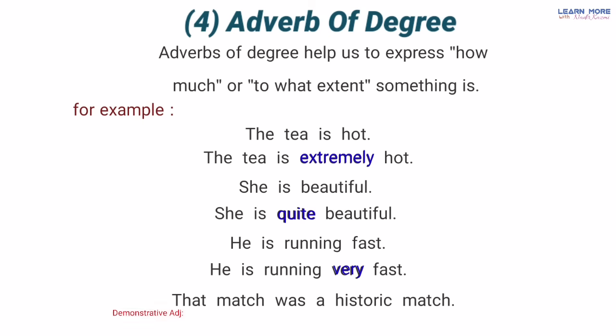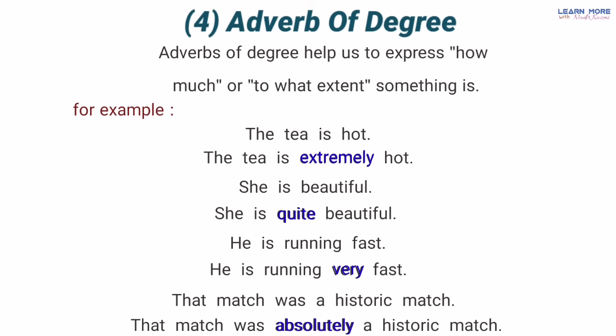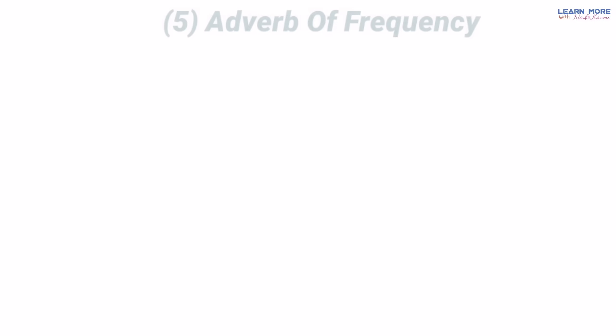'That match was a historic match' — woh match ek tariqi match tha. 'That' yahan par ek demonstrative adjective hai kyunke uske foran baad 'match' jo noun hai woh aa raha hai. 'Match' yahan par ek noun hai aur 'historic' adjective hai kyunke yeh us noun match ke baare mein humein information de raha hai ke woh match kaisa tha — historic, tariqi. Ab dekhen: 'That match was absolutely a historic match' — woh match bilkul ek tariqi match tha. Ab yahan par jo 'absolutely' hai yeh ek adverb of degree hai kyunke yeh adjective 'historic' ko modify kar raha hai, uski degree badha raha hai — pehle tha ke woh match tariqi tha, ab hai ke woh match bilkul tariqi match tha.